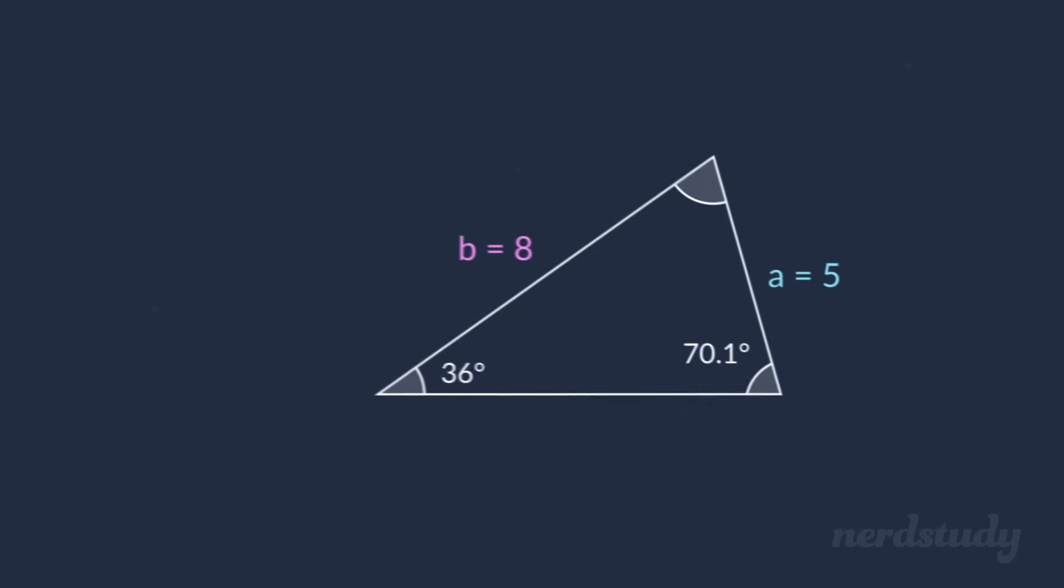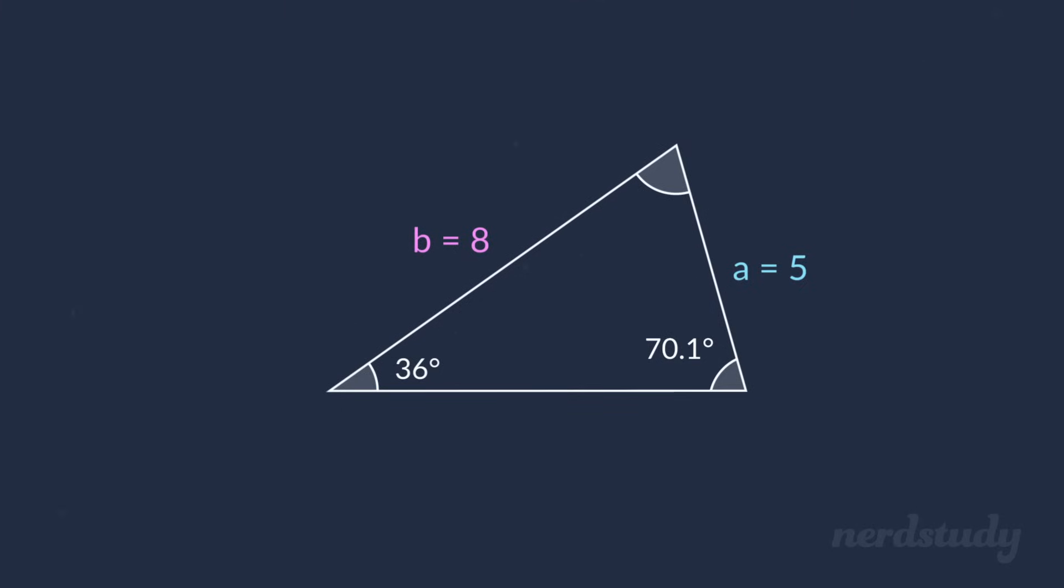So the way to algebraically find out if we have an ambiguous case is this. We first assume the side length of 5 on this side. Now this makes for an angle over here that is congruent with this angle over here, since these two side lengths are the same. This would automatically mean that this angle over here would be 180 minus 70.1. The answer to this angle becomes 109.9.